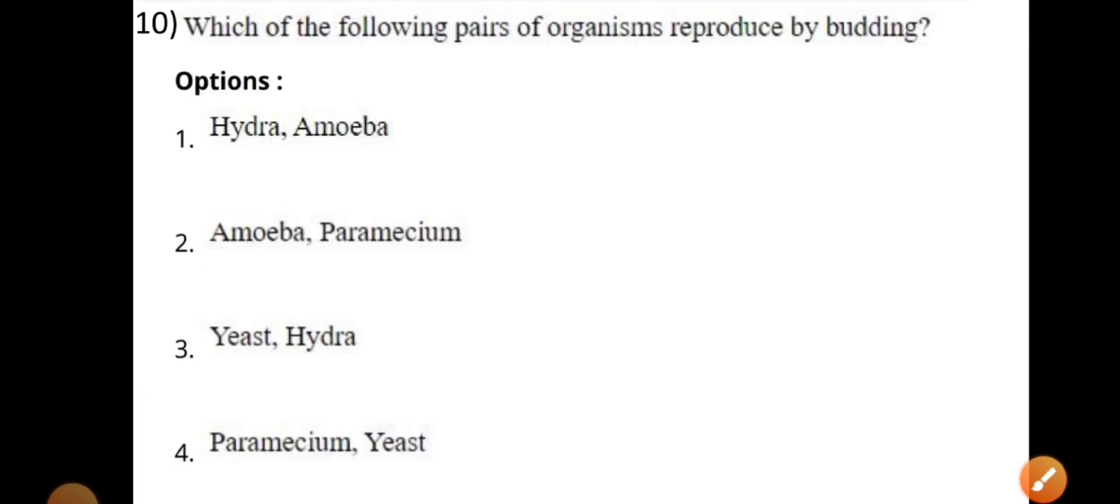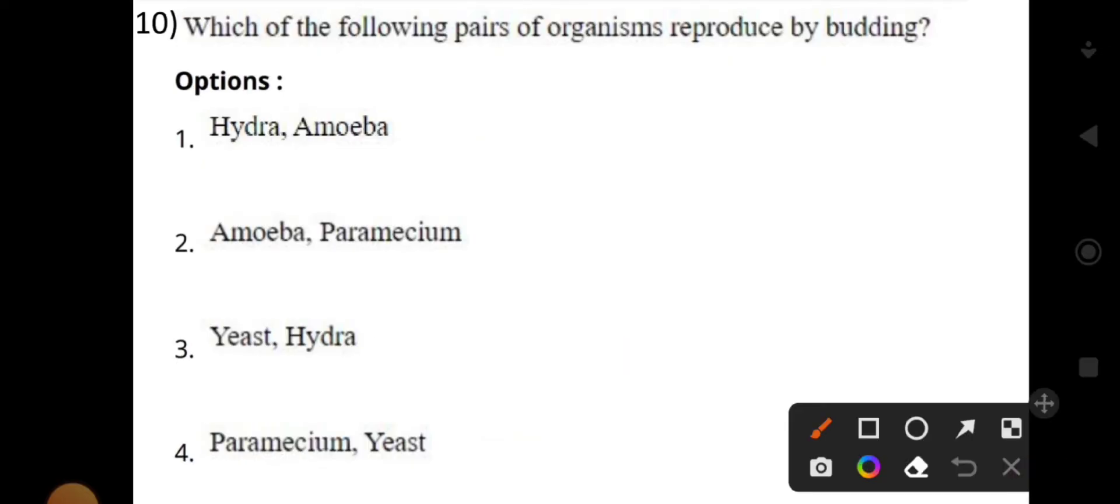Which of the following pairs of organisms reproduce by budding? The correct answer is yeast and hydra.